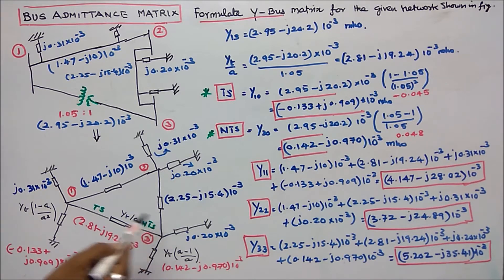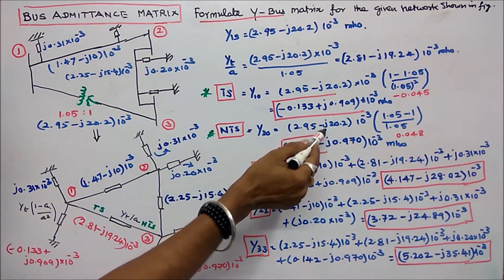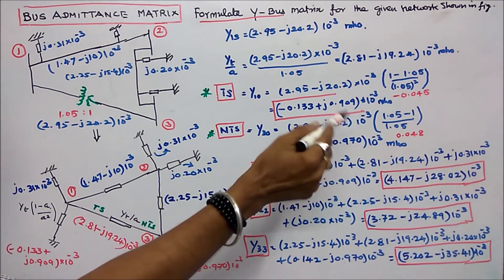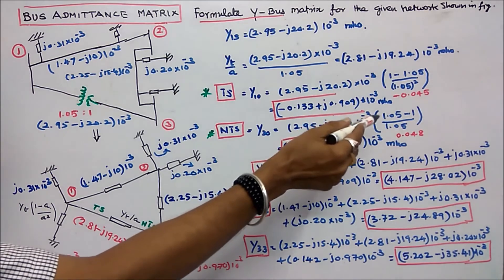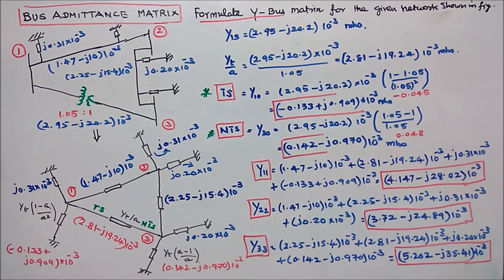Similarly, on the non-tap setting side, the formula is yt into (a minus 1) divided by a. That is 2.95 minus j20.2 into 10 power minus 3 into 1.05 minus 1, divided by 1.05. This equals 0.142 minus j0.970 into 10 power minus 3.